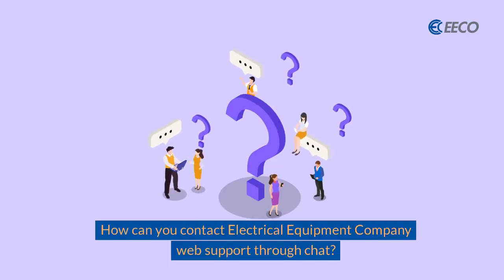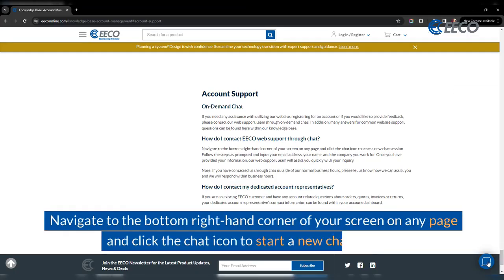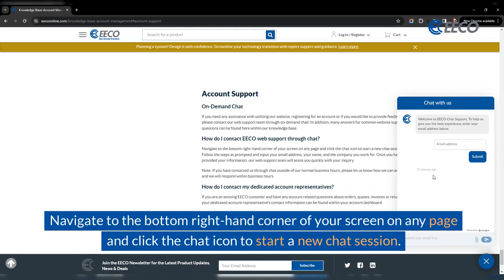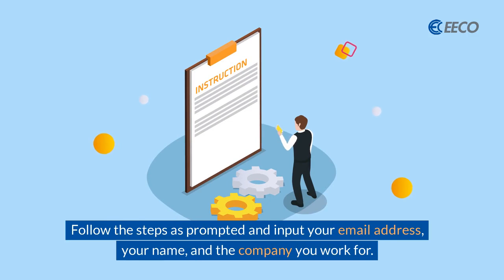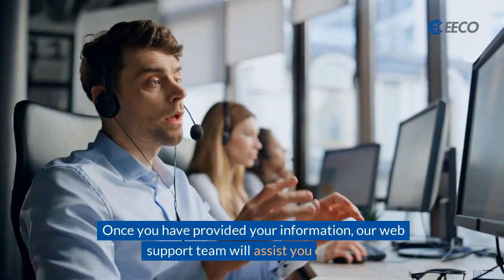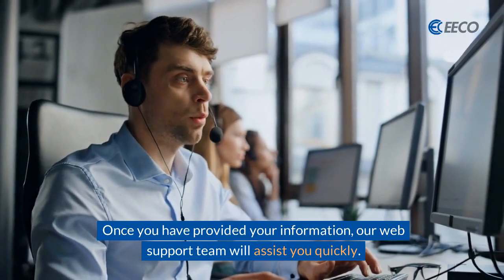So how can you contact electrical equipment company web support through chat? Navigate to the bottom right-hand corner of your screen on any page and click the chat icon to start a new chat session. Follow the steps as prompted and input your email address, your name, and the company you work for. Once you have provided your information, our web support team will assist you quickly.